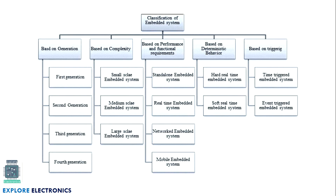We have seen the classification of embedded systems in the previous video. Let us recall — the classification of embedded systems can be based on the generation, based on the complexity, based on the performance, based on the behavior, and also based on the triggering of the device. Based on the generations, we have first generation, second generation, third, and fourth generation.